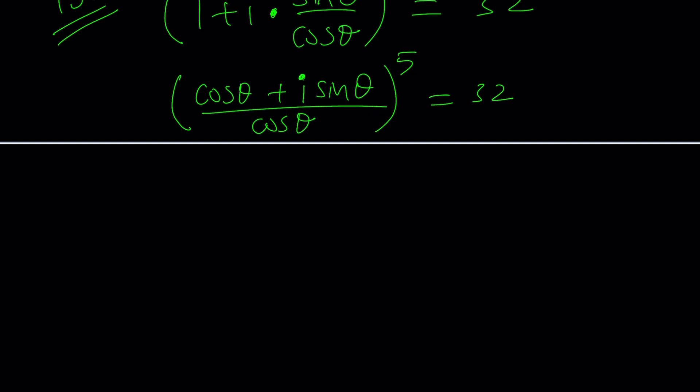If you look at the numerator, by the way, if you're new to complex numbers, check out my lecture videos. The numerator by Euler's formula can be turned into something nice. What is cosine theta plus i sine theta? Thanks to Euler, we can write it as e to the power i theta. E is Euler's number, of course.